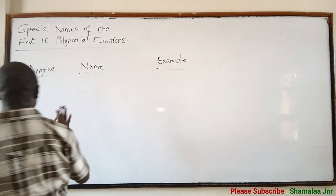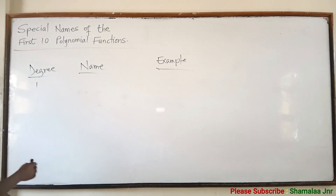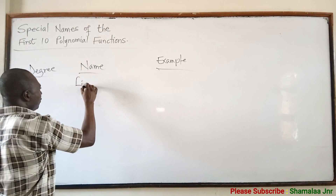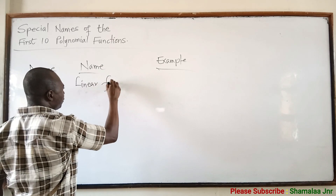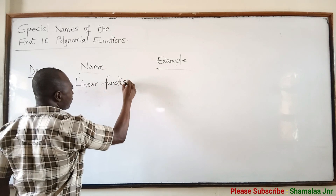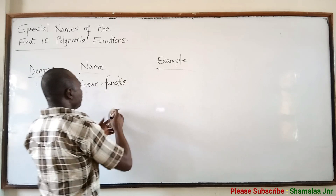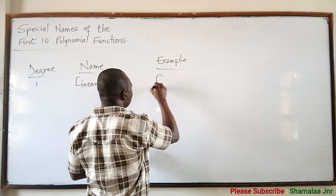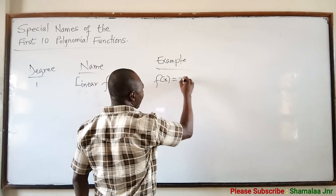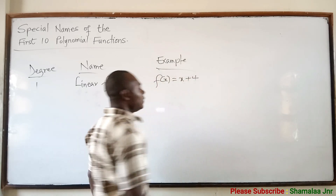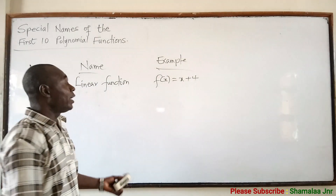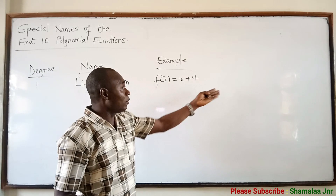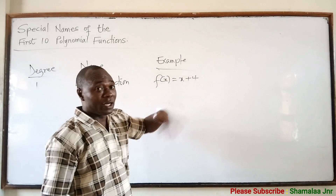So if a polynomial is of degree 1, what is the name given to it? We say that it is a linear function. For example, f(x) = x + 4. You can write as many examples as you want — x + 4, x − 4, x + 8, and so on.